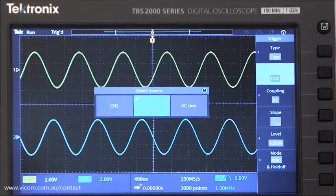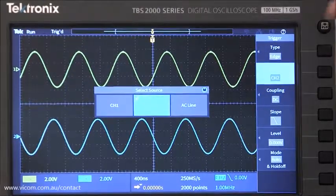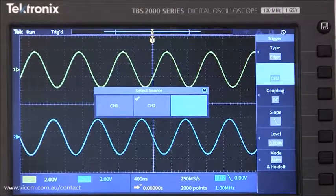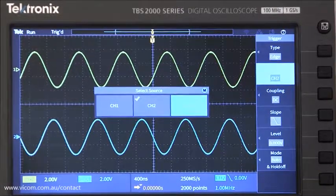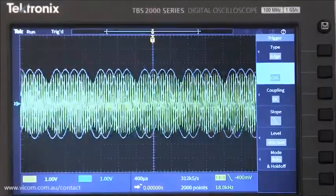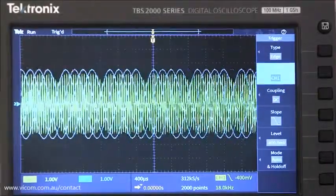The AC power line can also be used to sync up the scope. This is useful when you're working on power supplies or looking for power line noise in a circuit. Finding the right trigger source can be the key to analyzing complex signals.